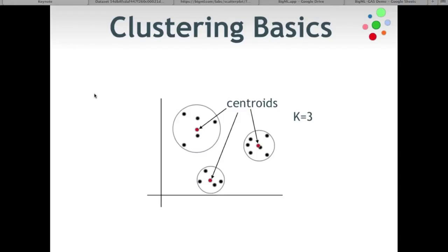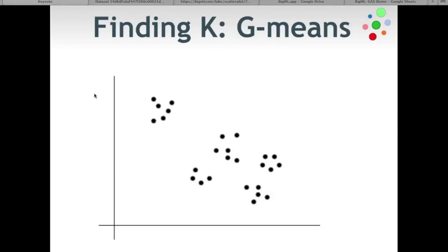Sometimes specifying K is fine — for example, customer segmentation where you want a fixed number of groups. But when exploring data, you'd prefer an optimal K to be discovered automatically. G-Means is one approach to discover an optimal K for a specific situation.